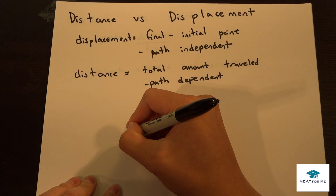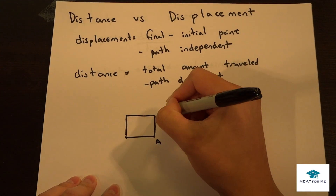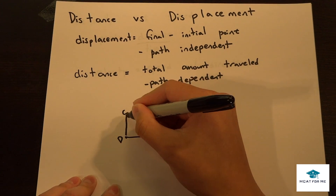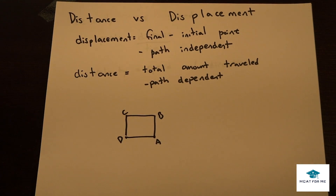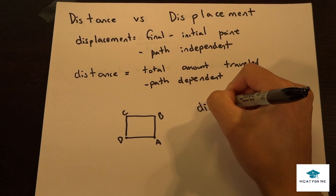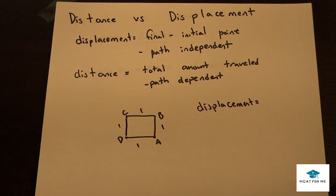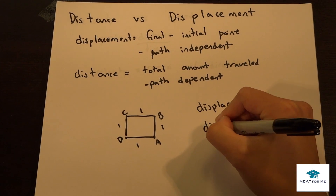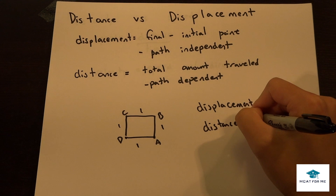Let's take a look at an example. Say we have a path where I started from a point and went A, B, C, then to D and then back to A. This is my initial and this is my final point. Assuming all sides are 1 meter, the displacement is the final minus the initial, so it's 0 meters. The distance, however, is just how much I traveled — the total amount traveled was 4 meters.